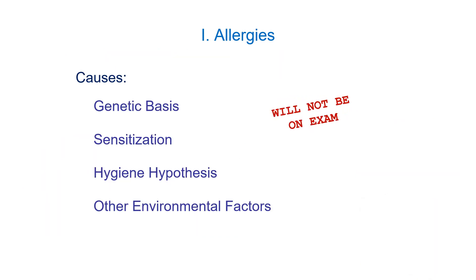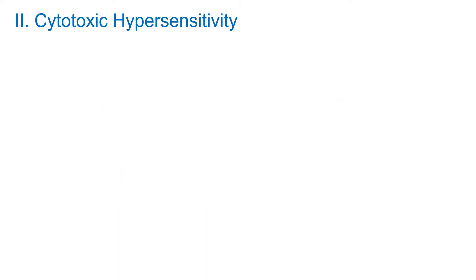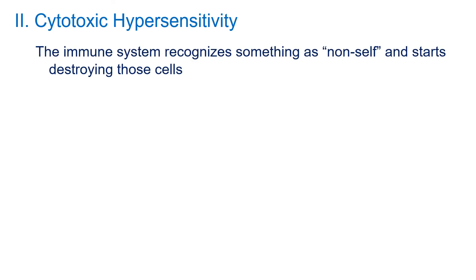The causes of allergies are not something we'll go into in detail; it will not be on the exam. There is clearly some genetic component, as allergies tend to run in families. You also have to be sensitized — exposed to something, potentially through the skin, which seems to be the source of many peanut allergies. There is also the hygiene hypothesis: we don't encounter many parasitic diseases in Canada, so our immune systems look for something to do. And of course there are environmental factors — chemicals, plastics, and others — that may be affecting our health in ways we don't fully understand.